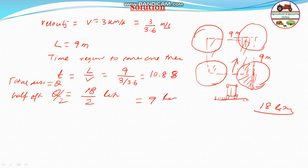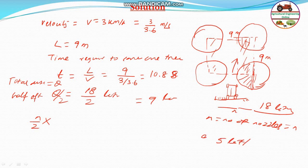Each nozzle - let the total number of nozzles be N. N/2 is the number of nozzles on half of the boom. N/2 multiplied by the discharge of each nozzle - which is given as 5 liters per minute, that is 5/60 liters per second - multiplied by time 10.8 seconds equals 9 liters.